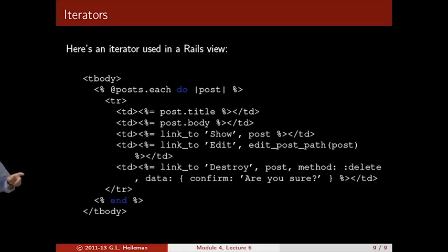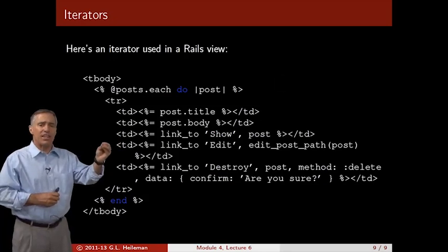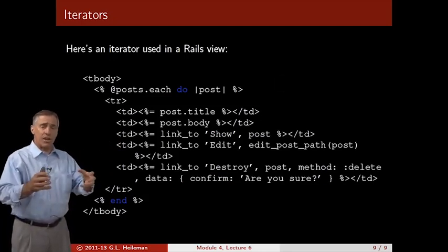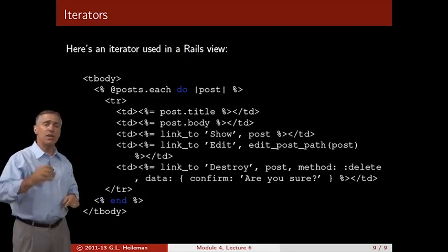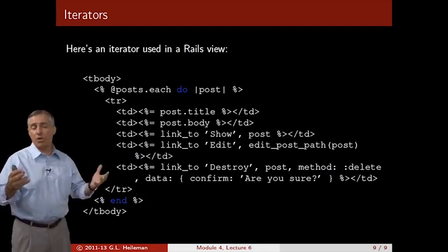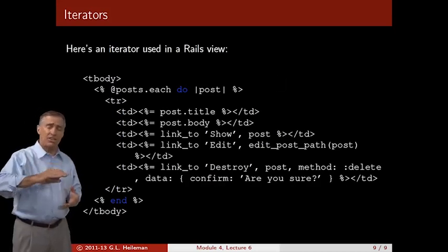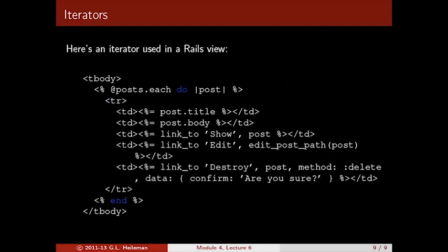One other thing I want to remind you is if you look at some of these lines for the table data, there's a percent equal. What happens with embedded Ruby is that actually generates HTML code that gets inserted at that line. If there's no equal sign, it's just a control structure that's being executed. So here you have an iterator that's actually creating lines of HTML as it goes through this loop. A very common thing to do in Rails applications is to use iterators in this fashion.